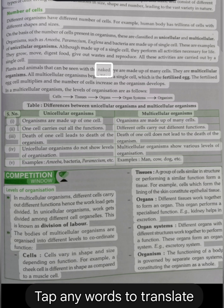Plants and animals that can be seen with the naked eye are made up of many cells. They are multicellular organisms. All multicellular organisms begin life as a single cell, which is the fertilized egg. The fertilized egg cell multiplies and the number of cells increase as the organism develops. In a multicellular organism, the levels of organization are as follows: Cells, tissues, organs, organ systems → organism.